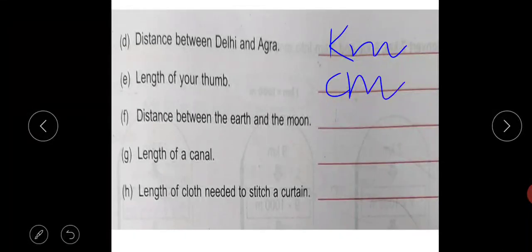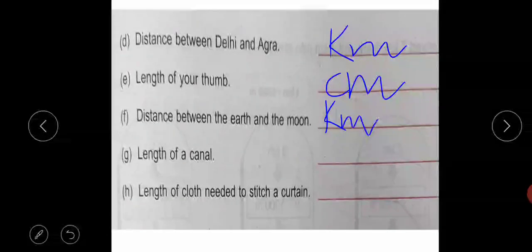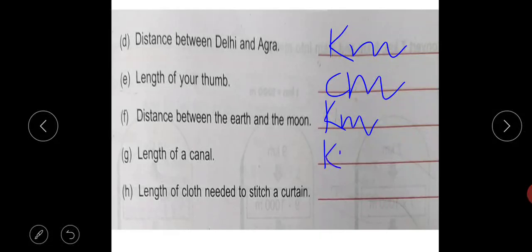Distance between the earth and the moon - very long distance, use kilometer. Length of a canal - kilometer. And then length of cloth needed to stitch a curtain - it is meter.